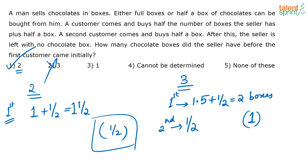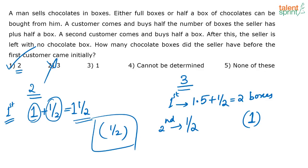Let me explain how it is 2 once again. Assume the seller has 2 boxes. A customer comes and buys half the number of boxes — half of 2 is 1 — plus half a box, so the first customer is purchasing one and a half boxes total. Half a box is remaining with the seller.